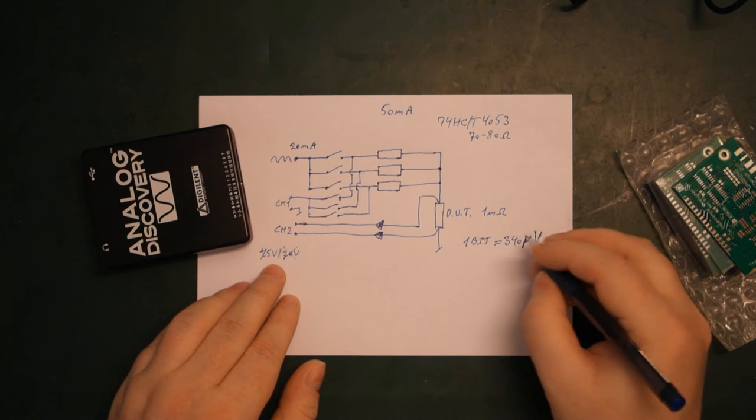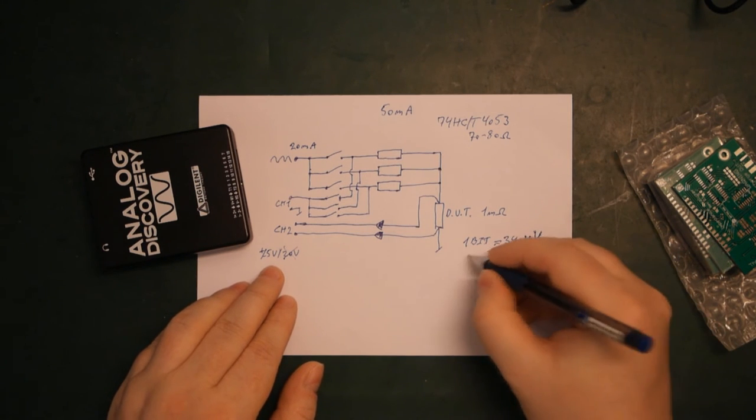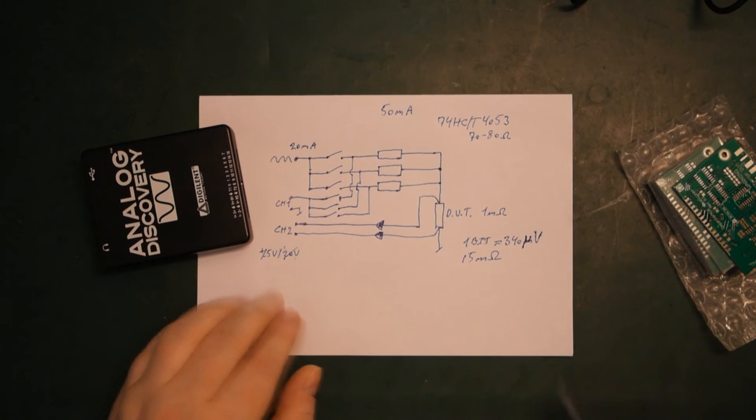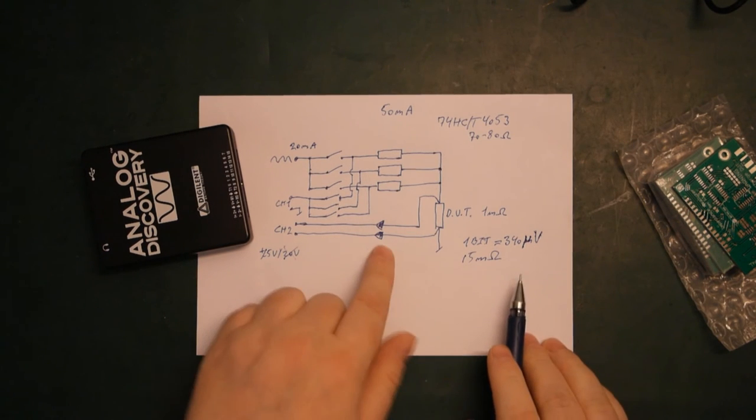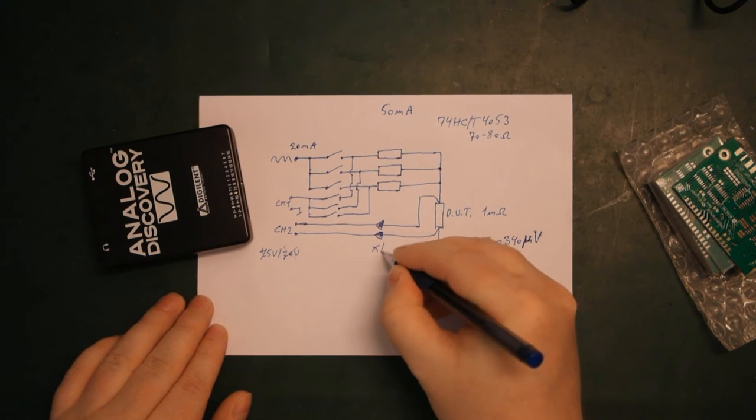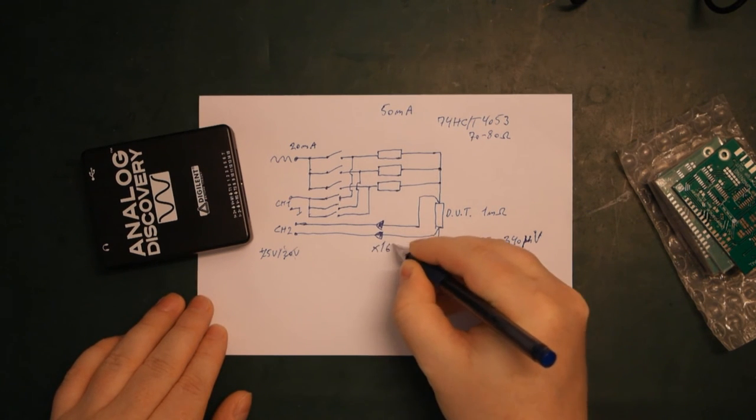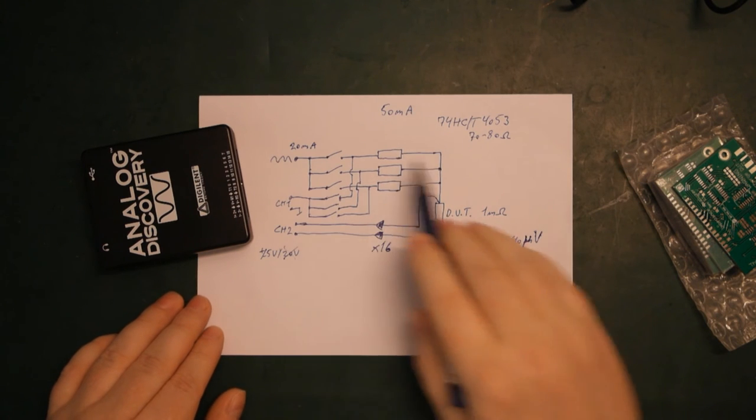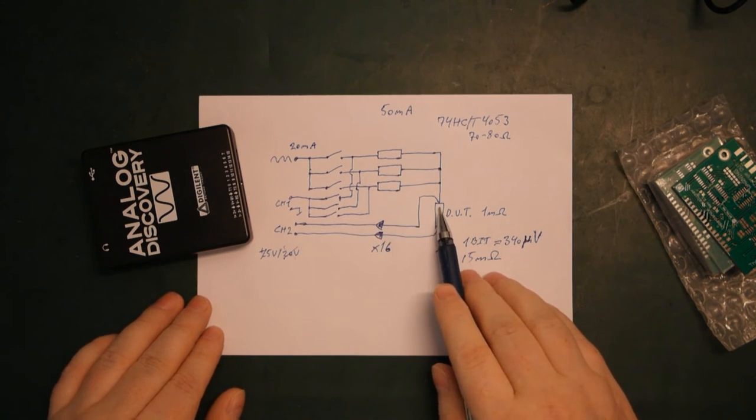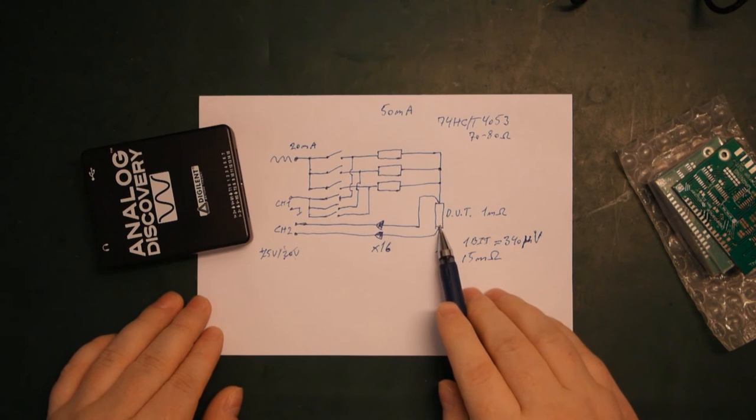That would only allow us to go down to about somewhere between 10 and 20 milli-ohms. So let's say 15 milli-ohm here. But with amplification, I've added 16 times amplification. So that means we can run with lower voltage because if we were to measure something in circuit, we want to measure it with...